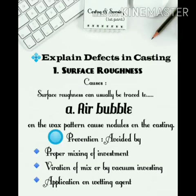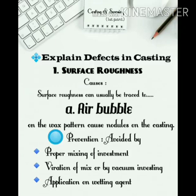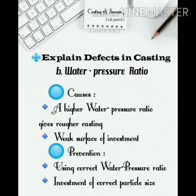Explaining defects in casting. 1. Surface roughness. Causes: Surface roughness can usually be traced to — A. Air bubbles on the wax pattern, which cause nodules on the casting. Prevention: Avoided by proper mixing of investment, vibration of mix or by vacuum investing, and application of a wetting agent. B. Water/powder ratio — a higher water/powder ratio gives rougher casting and a weak surface of investment. Prevention: Using correct water/powder ratio and investment of correct particle size.